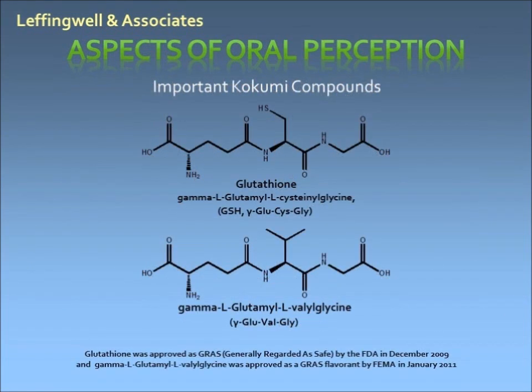Only recently have the two kokumi compounds shown here become available for use. Although glutathione has been known for a number of years to produce the kokumi effect and impart a heartiness and mouthfulness effect, it was only approved by the Food and Drug Administration in 2010. But as a natural constituent in yeast extracts, it undoubtedly has been present in certain foods for many years, as the kokumi effect often appears in traditional Japanese cuisine. Gamma-glutamyl-valyl-glycine was approved as a GRAS flavor constituent in early 2011 by the Flavor Extract Manufacturers Association. The kokumi effect of this material is 12.8 times stronger than that of glutathione.